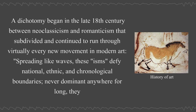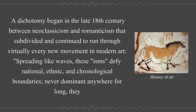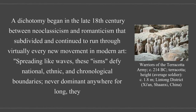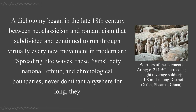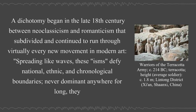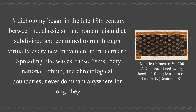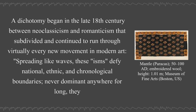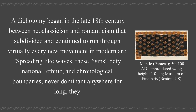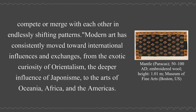A dichotomy began in the late 18th century between neoclassicism and romanticism that subdivided and continued to run through virtually every new movement in modern art. Spreading like waves, these isms defy national, ethnic, and chronological boundaries. Never dominant anywhere for long, they compete or merge with each other in endlessly shifting patterns.